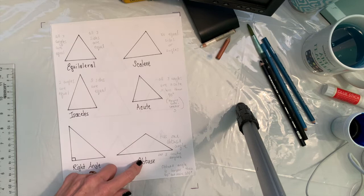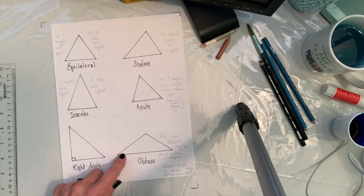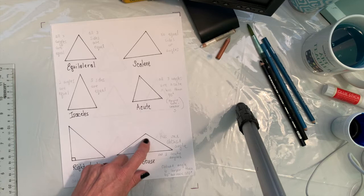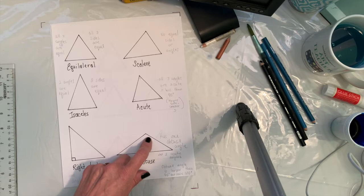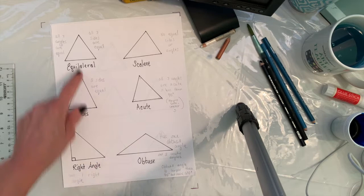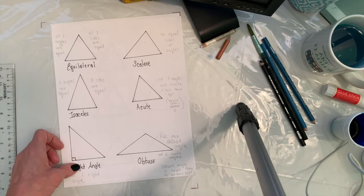For acute triangles, all angles are less than 90 degrees. Obtuse triangles have one obtuse angle and two acute angles — the two smaller angles are less than 90 degrees, and the one obtuse angle is larger than 90 degrees but less than 180 degrees, so it could be like 130 or 160 degrees. Those are our geometric triangle types — you know about these from geometry.